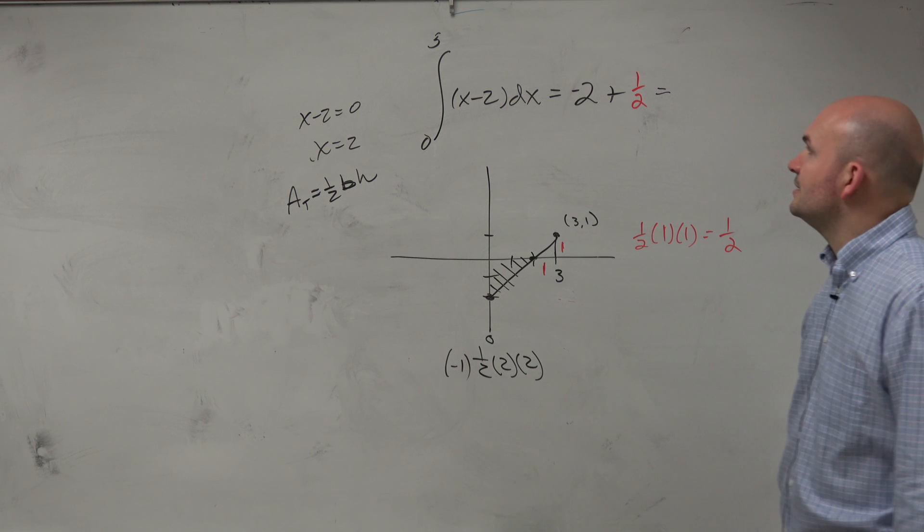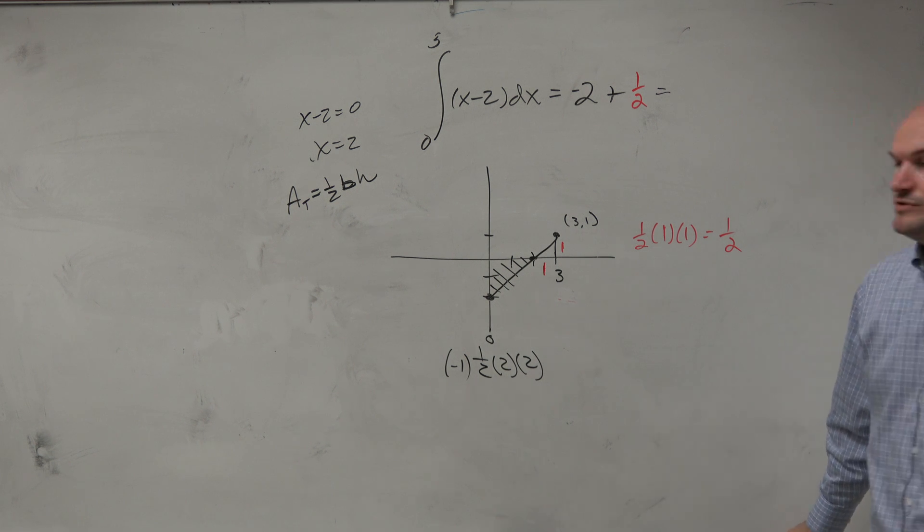So therefore, that gives me a negative 1 and 1 half, which would be a negative 3 halves.